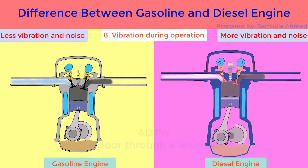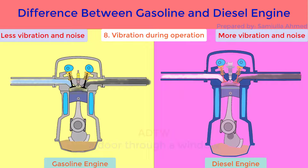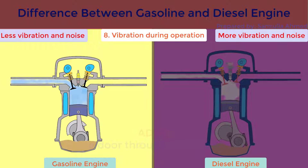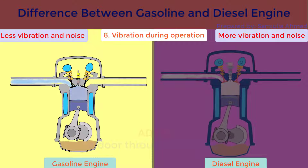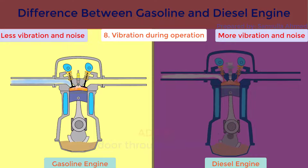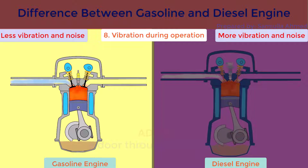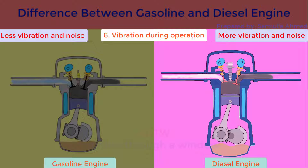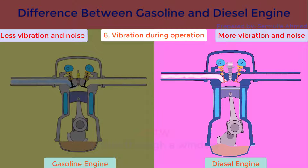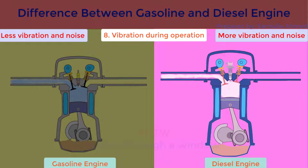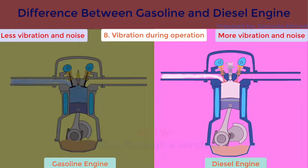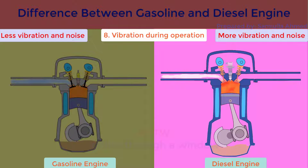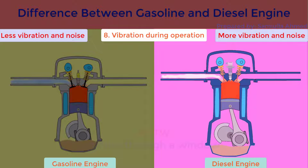Engine vibration during operation. Gasoline engines have lower engine vibration and noise. This is because of the uniform mixture of gasoline with air, which gives smooth combustion and therefore vibrations are less. On the other hand, diesel engines have higher engine vibration and noise. This is because the fuel is injected into the compressed air at the end of compression stroke and the combustion is due to auto-ignition, which leads to higher vibration.